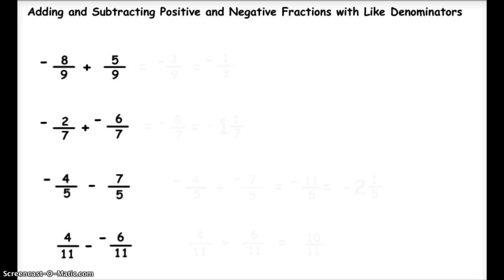The first problem, I have negative 8 ninths plus 5 ninths. Whenever I add or subtract fractions, the first step is to always make sure I have a common denominator. In this problem, I already have a common denominator.